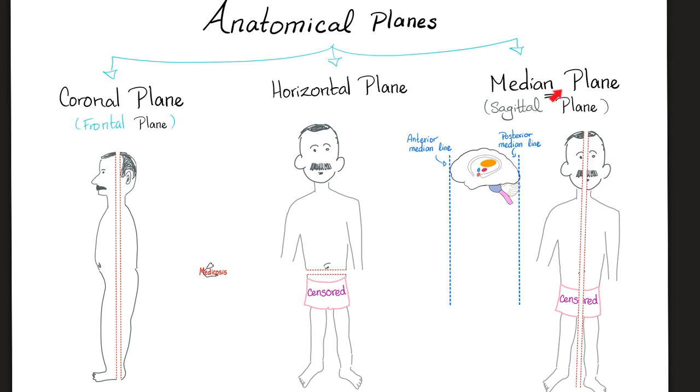Third, there is the median plane. Notice I said median with an N, not medial with an L. Median with an N is in the midline. You cut me like this in the midline, vertically. And now I'm divided into a right half and a left half. While cutting me like this, you also cut my brain.